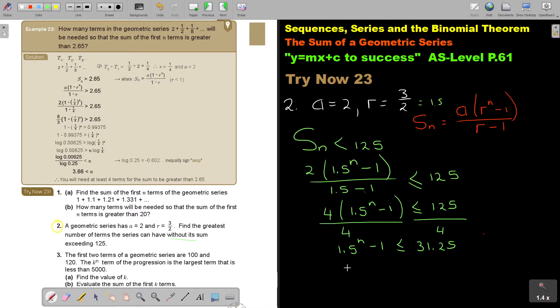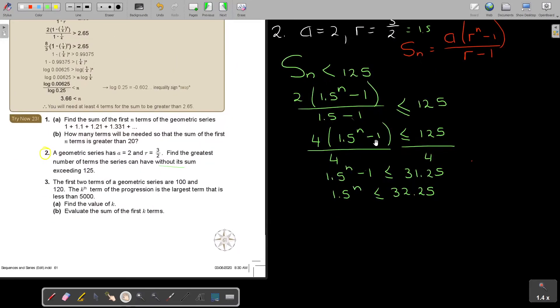And then I add that 1. Let me just see. 1.5N, and if I add that 1, it's going to be 32.25. And now I can take the logs on both sides. Let's just move it up. So log 1.5N, log 32.25. So bring the N down.